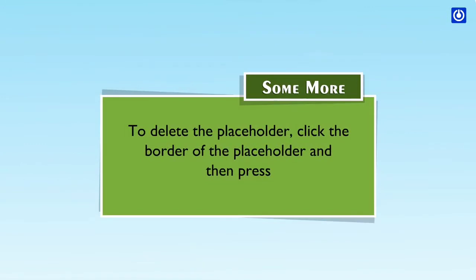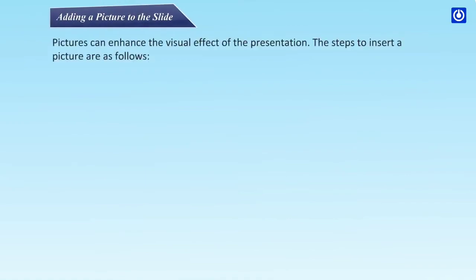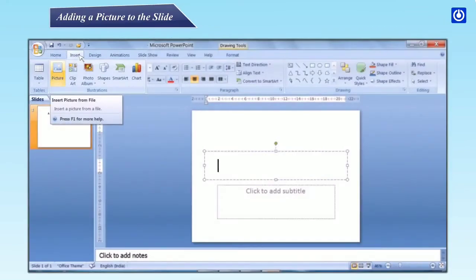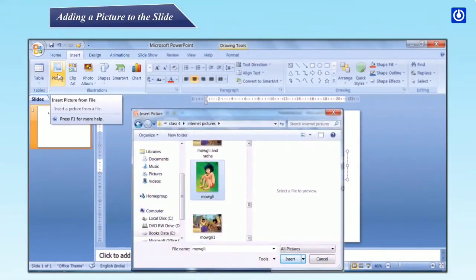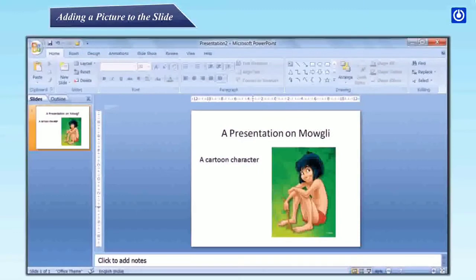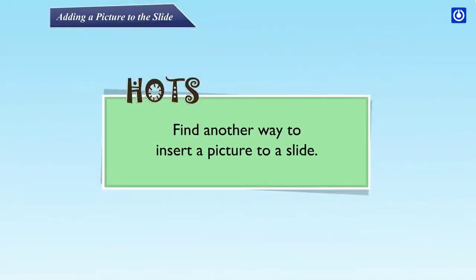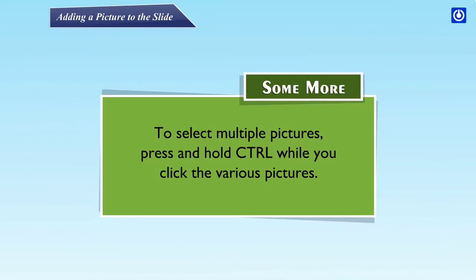To delete the placeholder, click the border of the placeholder and then press Delete. Adding a picture to the slide: pictures can enhance the visual effect of the presentation. Step one, click on the Insert tab; step two, click in the Illustrations group and then click Picture. The Insert Picture dialog box appears. Step three, locate the picture you want to insert; step four, double-click it or click the Insert button and the picture will be inserted into your slide. To select multiple pictures, press and hold Ctrl when you click the various pictures.